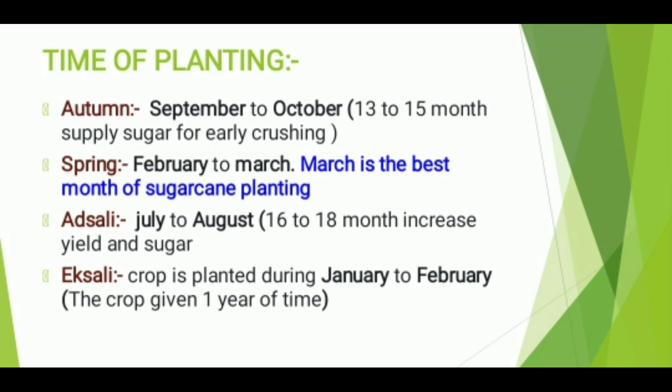Time of Planting of Sugarcane: Autumn season — September to October — 13 to 15 months duration — supplies sugar for early crushing. Spring season — February to March — March is the best time of planting. Adsali — July to August — 16 to 18 months — increased yield and sugar. Adsali crop is planted during January to February.